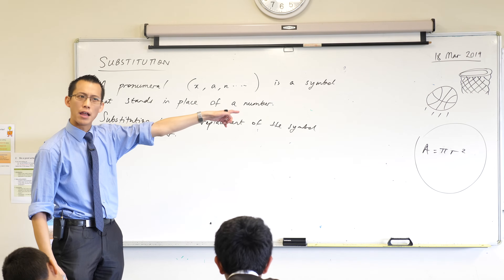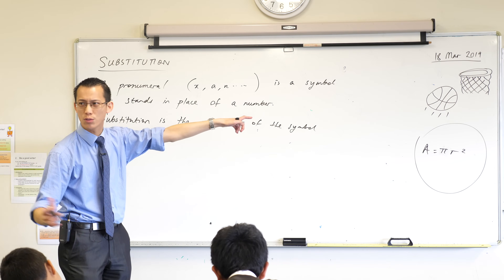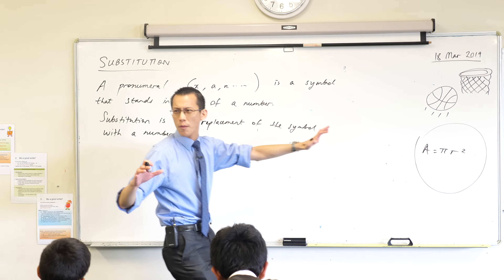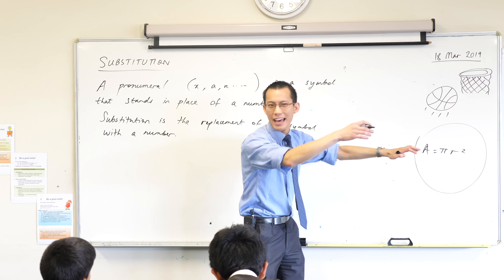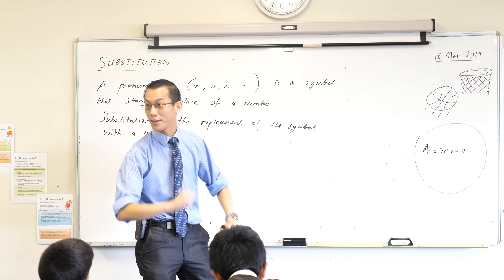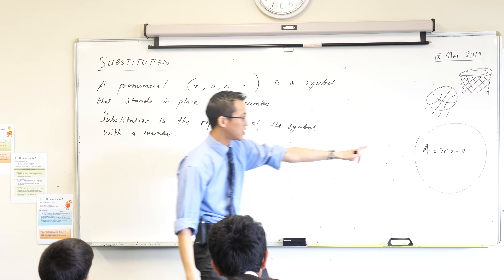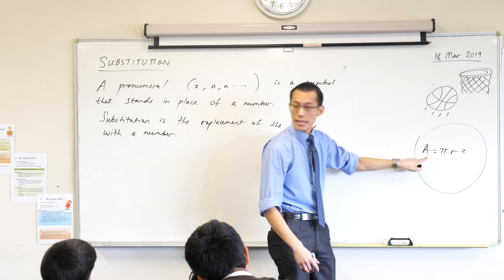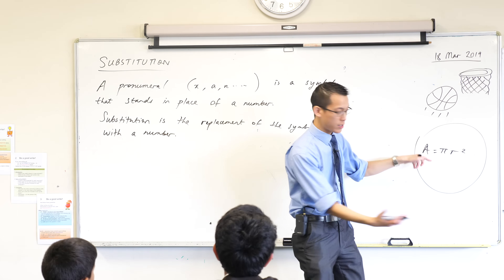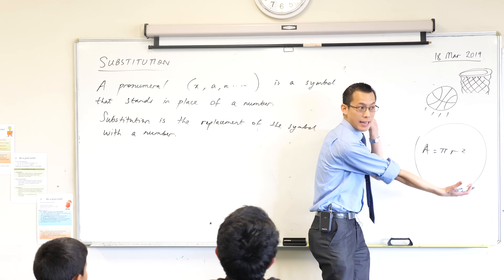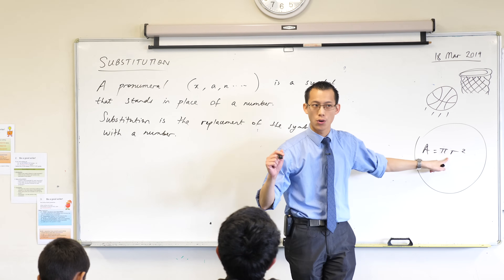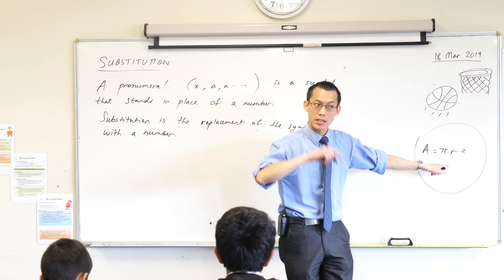What does the pi stand for, by the way? It always stands for the same thing every single time. 3.14 and on and on — I'm not going to ask you to say all the digits because we'd be here forever. So it stands for a number. What does the A stand for? It's the area — it's what we're trying to calculate. And the R of course stands for radius. Very good.